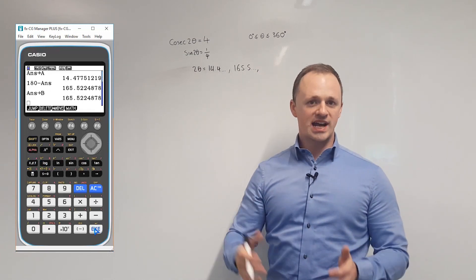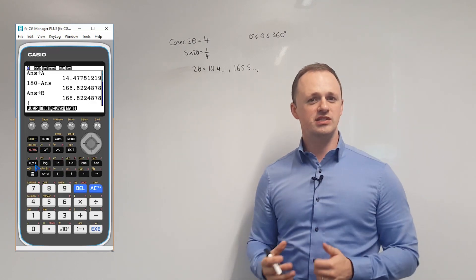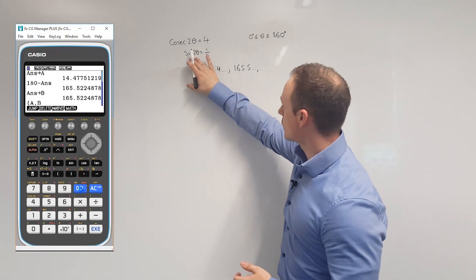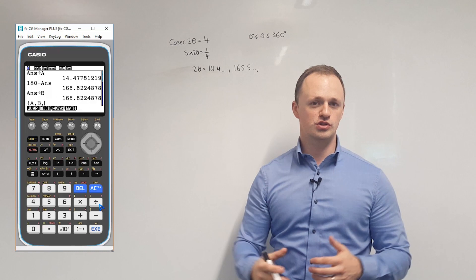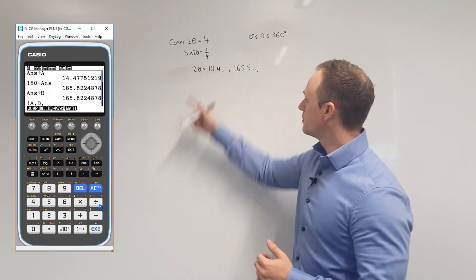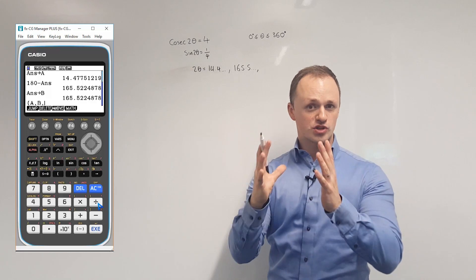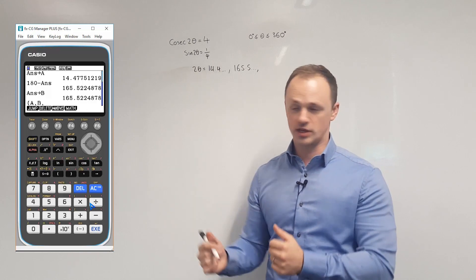We can then get further solutions by adding multiples of 360 onto these two. But before we do that, we might want to consider how many solutions we expect to see. If we were solving an equation that said sine θ equals something, we would generally expect to see two solutions between 0 and 360. But because the graph has been stretched here by scale factor 1 half, it's like it's squashed together, we would then expect to see four solutions for sine 2θ equals something.